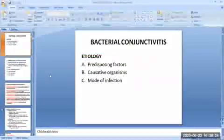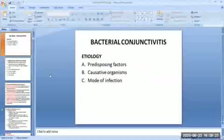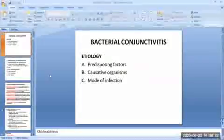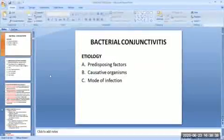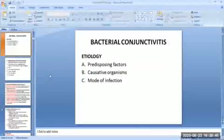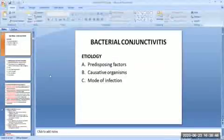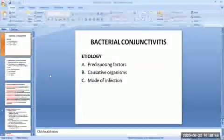The first type of infective conjunctivitis is bacterial conjunctivitis. There has been a relative decrease in the incidence of bacterial conjunctivitis in general, and those caused by gonococcus and Corynebacterium diphtheriae in particular. However, in developing countries, it still continues to be the commonest type of conjunctivitis and can occur as sporadic cases and epidemics. Outbreaks are quite frequent during the monsoon season.